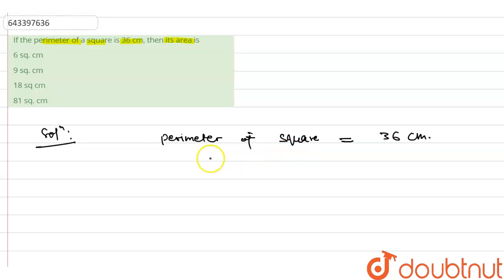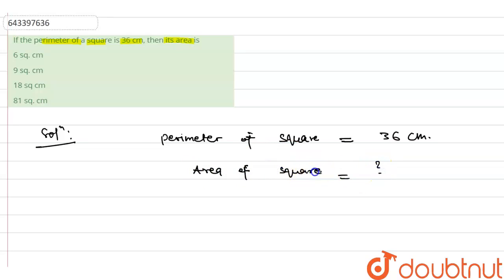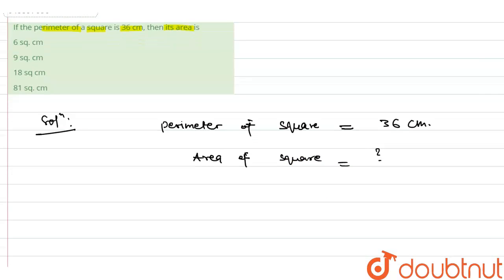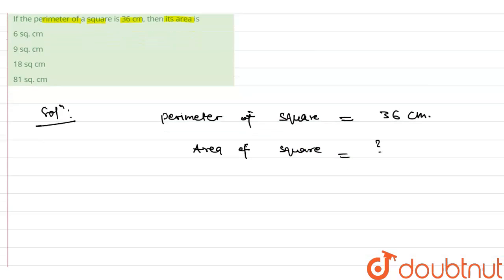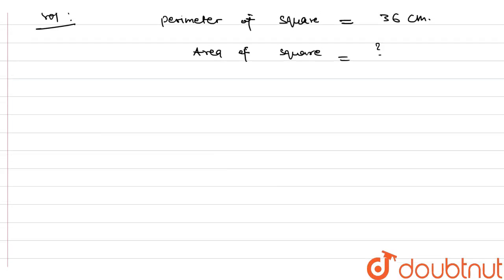Now, what we have to find? We have to find the area of the square. So let us come to solve this question. First of all, we will make a figure, and this will be easy. Just try to understand this.